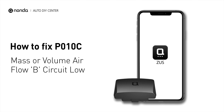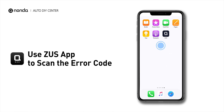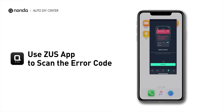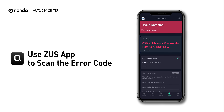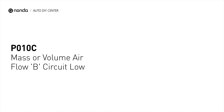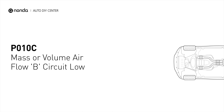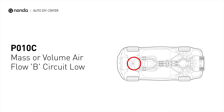If you are getting a P010C error code, this video is going to show you one practical solution to fix the error code at home. Use the Zeus app to scan your vehicle and see the error code P010C. This code is set when the MAF sensor signal voltage or frequency is below expected values.